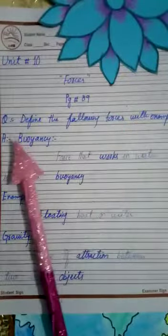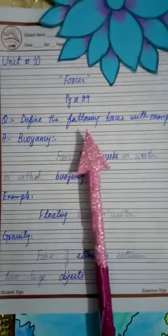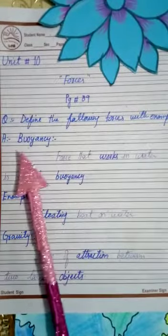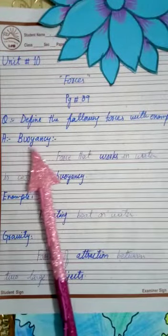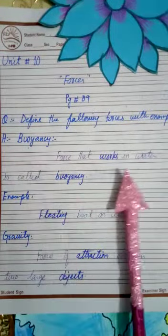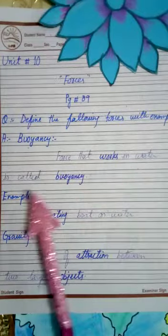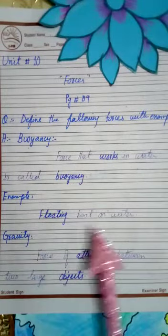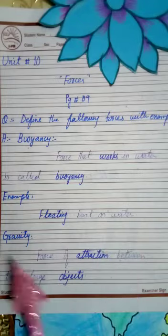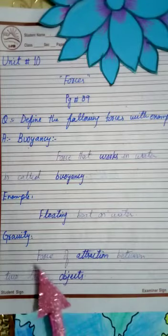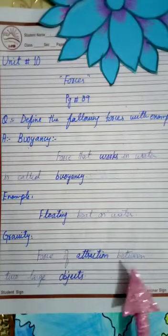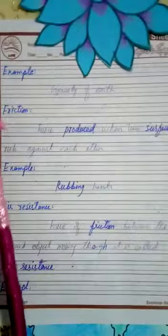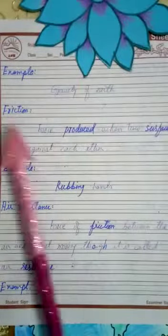Unit 10 Forces, page number 89. Define the following forces with example. Answer: Number one — buoyance force, that works in water, is called buoyance. Example: floating boat on water. Next — gravity: force of attraction between two large objects. Example: gravity of earth.